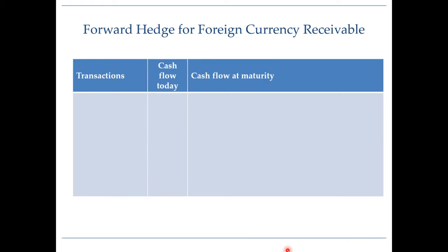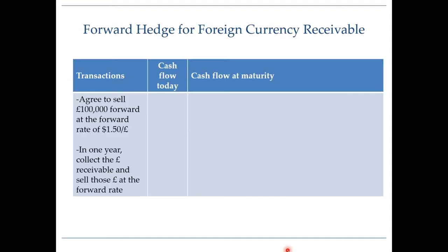Let's take a look at how we would use a forward hedge for a foreign currency receivable. We just sold soybeans to a UK buyer and we're expecting to receive 100,000 pounds in one year's time. Our concern is that we do not know what the dollar amount of our dollar proceeds is going to be in one year's time, because we do not know what the spot rate is going to be between pounds and dollars in one year's time.